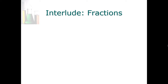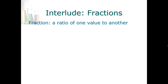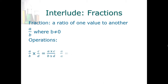A fraction is a ratio of one value to another, so let's say a over b where b is not zero. There are certain things we can do in terms of operations. When I multiply fractions, I basically multiply the numerators and multiply the denominators. A number divided by itself — a fraction of same over same — equals one. So if I take any fraction and multiply times a over a, I get the same fraction back. Also, if I multiply a fraction a/b times c/a, the a's will cancel because it's essentially multiplying times one, and you get c over b.